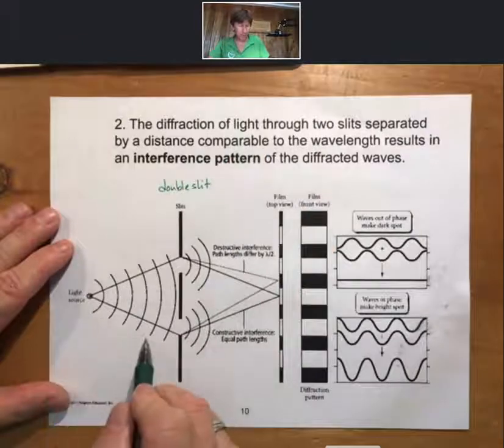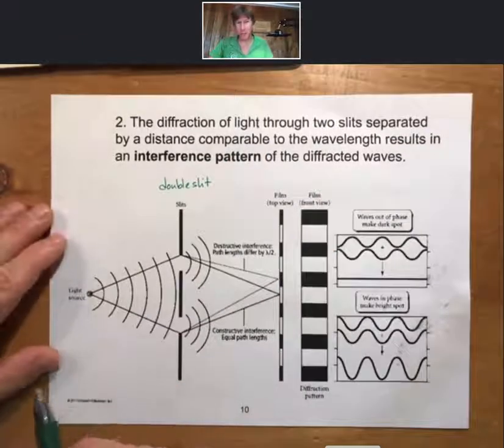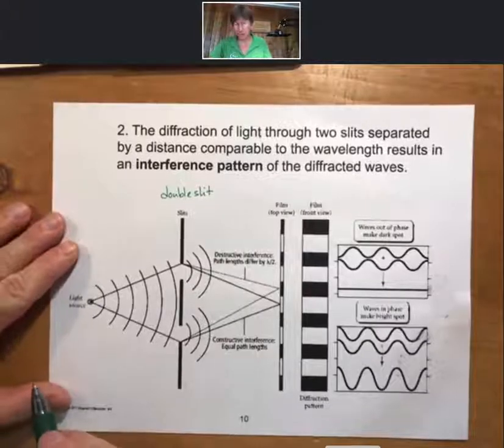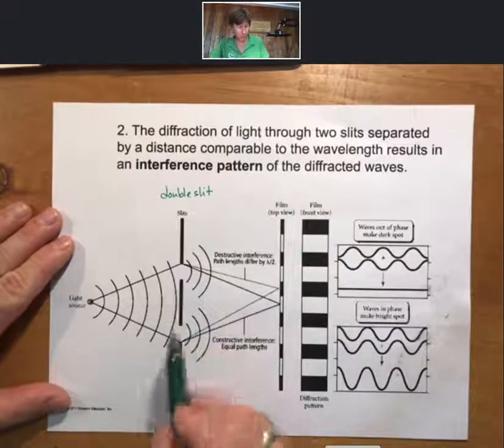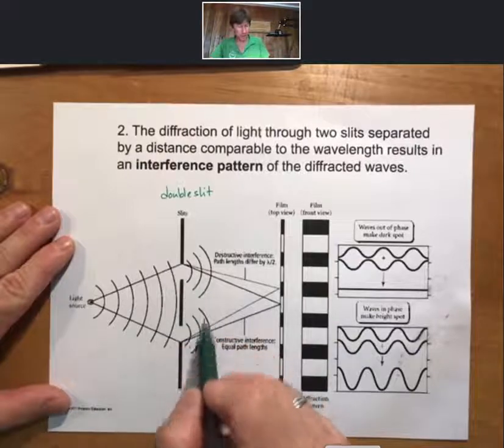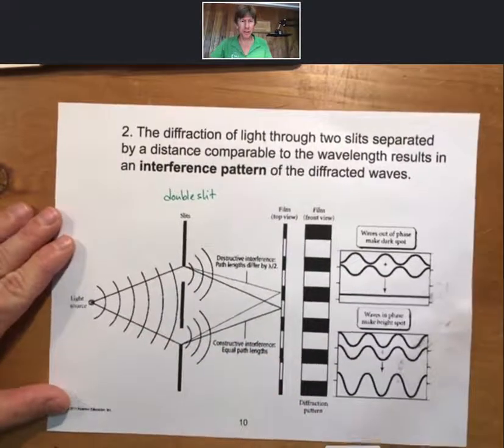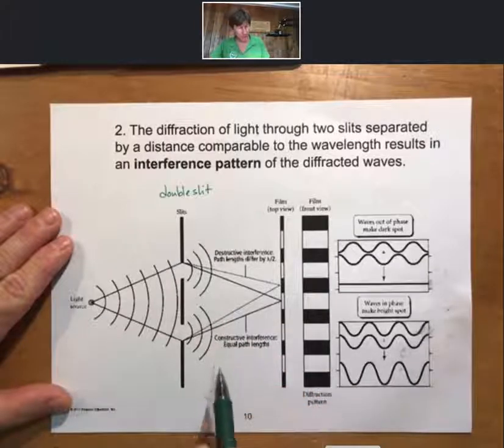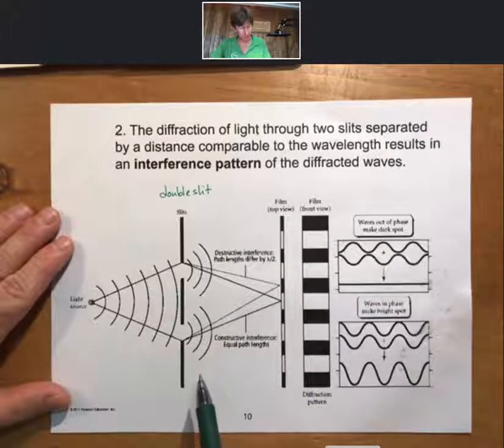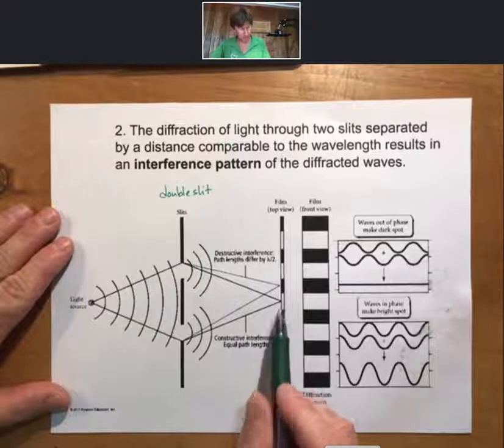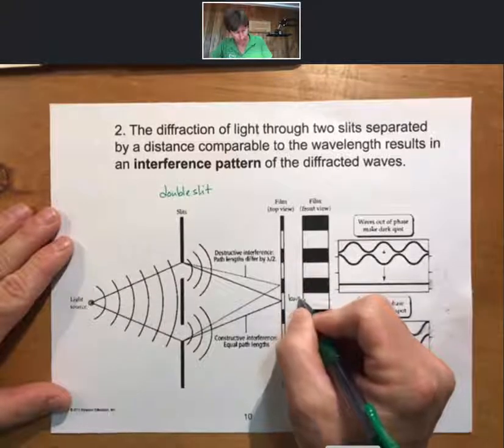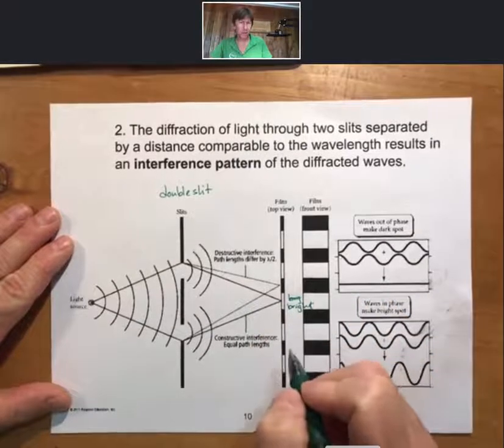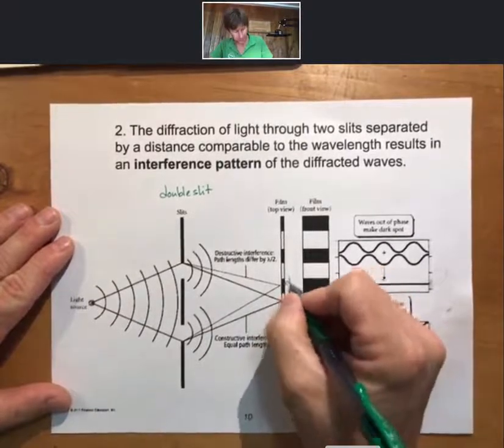You have a light source, and this works for water as well, but we're going to focus now on light or any kind of electromagnetic radiation. As the waves go through two slits you will have diffraction at each of those. And those waves, those diffracted waves, will then exactly constructively interfere and produce a bright spot, and destructively interfere and produce a dark spot.